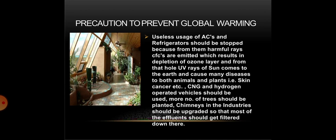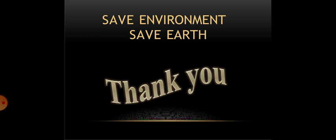Here are some precautions to prevent global warming. Unnecessary use of ACs and refrigerators should be stopped, because harmful rays emitted from them result in depletion of the ozone layer, allowing UV rays from the sun to reach the earth and cause many diseases to both animals and plants, such as skin cancer. CNG and hydrogen-operated vehicles should be used. More trees should be planted. Chimneys in industries should be upgraded so that most of the effluents get filtered. Save environment, save earth. Thank you.